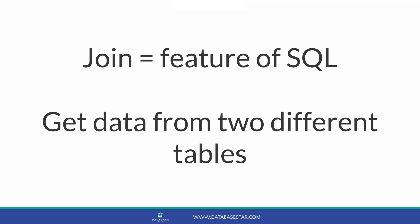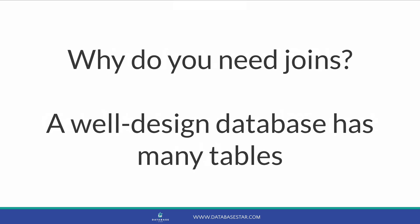So what is a join? A join is a feature of SQL that allows you to get data from two different tables where the records are related. They are used in all queries that involve multiple tables, which is a lot of queries that you'll write or see as a developer. Why do you need to use joins? It's because a well-designed database has its data split into several tables. You'll use joins to get data from related tables into a single query and a single set of results.